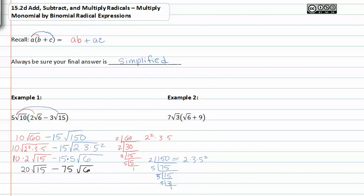I'm going to go ahead and get rid of my prime factoring and then move on to example two. In example two we again have a distribution that needs to happen with the seven root three. Multiplying those together we get seven root three times six which is eighteen.